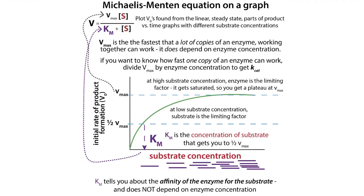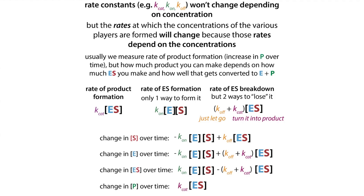We make conditions where the steady-state assumption is fairly reasonable: we're measuring at the very beginning, we have plenty of substrate, and we don't have enough product building up to make things go backwards. So we can make the steady-state assumption that the rate of substrate binding the enzyme equals the rate it either unbinds or gets converted into product — and remember, rate, not rate constants.